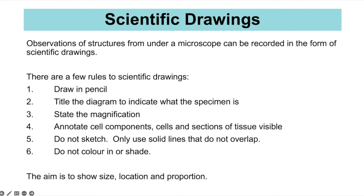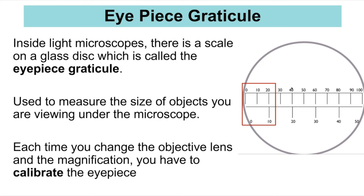You may also need to use an eyepiece graticule to measure the actual size of objects viewed under the microscope. To do this you need to calibrate your eyepiece graticule using a stage micrometer. Inside the light microscope there is a scale on a glass disc within the eyepiece — that's the eyepiece graticule — used to measure objects. You must calibrate it each time because at each magnification you need to know what each division is worth.